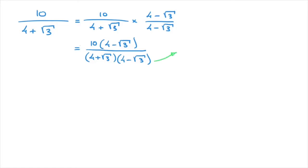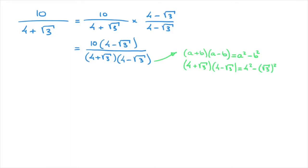We can see that the denominator can be thought of as a plus b times a minus b, and therefore the difference of two squares allows us to state that equals a squared minus b squared. In other words, 4 plus the square root of 3 times 4 minus the square root of 3 equals 4 squared minus (the square root of 3) squared, where we write the square root in parentheses. Keeping this result in mind, we go back to our calculation and start with the numerator, distributing the 10 across the parentheses. That leads to 10 times 4 minus 10 times the square root of 3, all over 4 squared minus (square root of 3) squared.